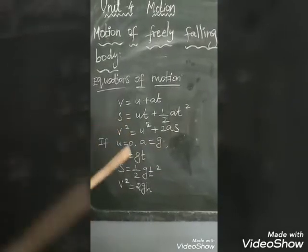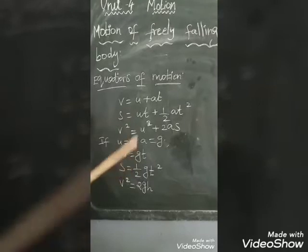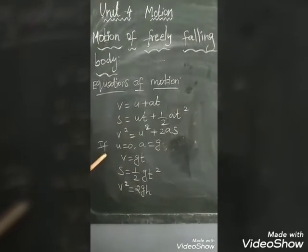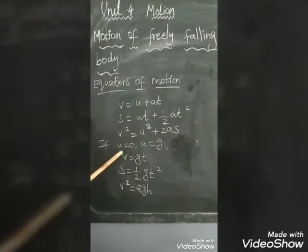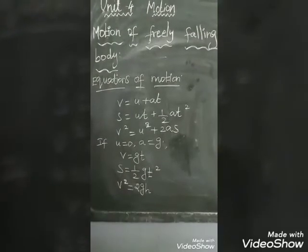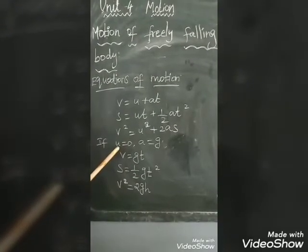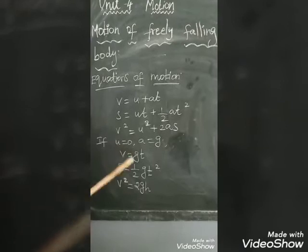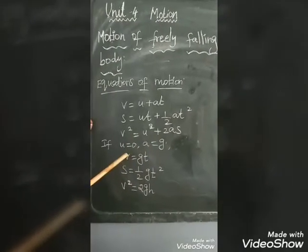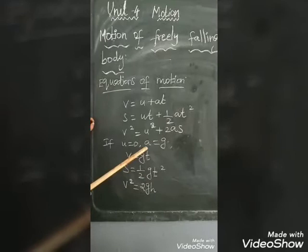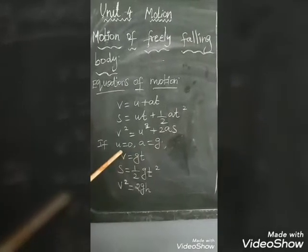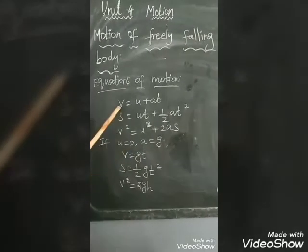If we want to find the equations for a freely falling body, we have to substitute U = 0, because initial velocity is 0. Then, A = G, because acceleration due to gravity. So, A is equal to G.